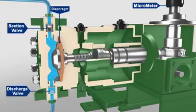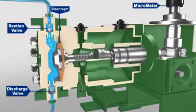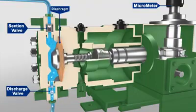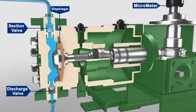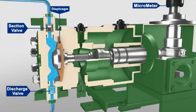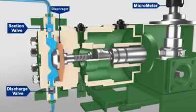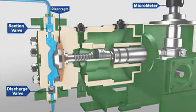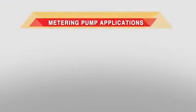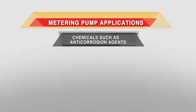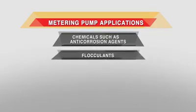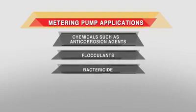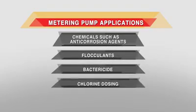A dosing pump will deliver this precise flow rate of chemical or other product by drawing a measured amount into a chamber and then injecting this volume of chemical into the pipe or tank being dosed. Metering pump applications include chemicals such as anti-corrosion agents, flocculants, bactericide, and chlorine dosing.